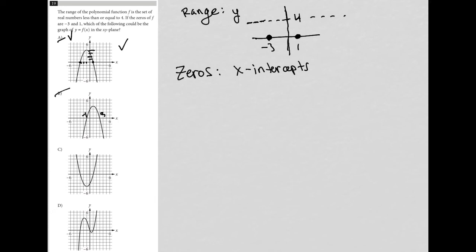Choice C, I can see that that's wrong because it exists above positive 4, whereas we only want the range to be below positive 4 for the y-values, so that's gone.